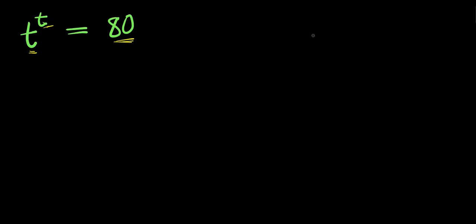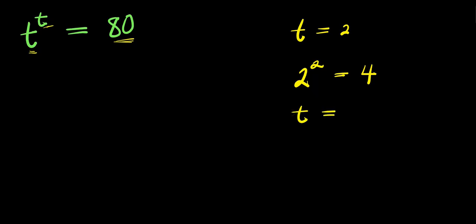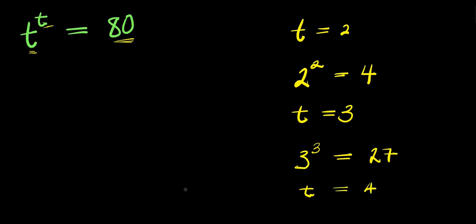So, if you consider some numbers — maybe if you consider t equals 2, this means you have 2 to the power of 2, and this is 4, which is not 80. If you consider t equals 3, you have 3 to the power of 3, and this is 27, which is obviously less than 80. If you consider t equals 4, you basically have 4 to the power of 4, and this is 256, which is greater than 80.